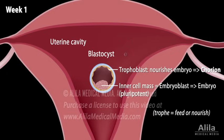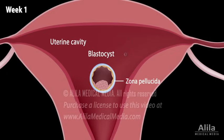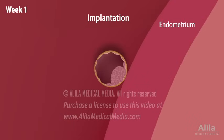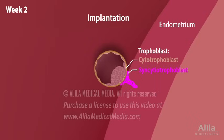The trophoblast secretes an enzyme that dissolves the membrane surrounding the conceptus, enabling it to hatch ready to be implanted. At the end of the first week, the blastocyst becomes attached to the endometrium. At the site of contact, superficial cells of the trophoblast fuse together to form the syncytiotrophoblast, which grows into the endometrium and derives nutrition from it. The endometrium responds by growing over and eventually enveloping the blastocyst.